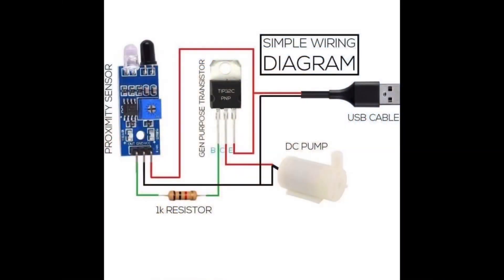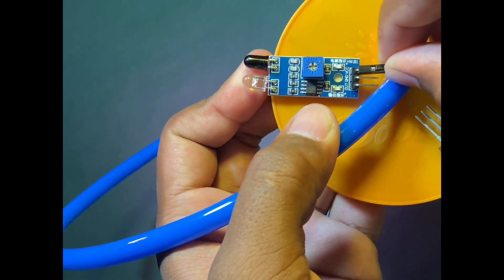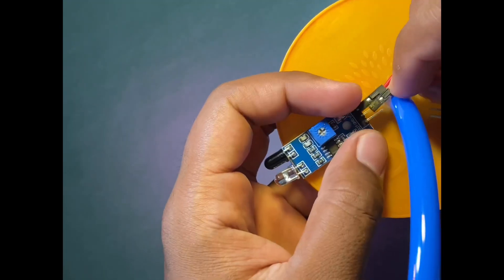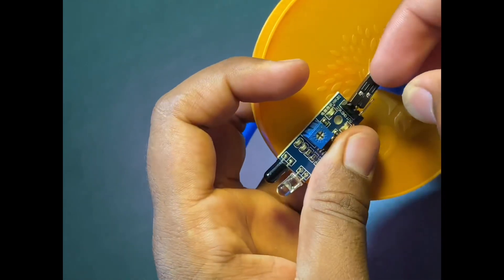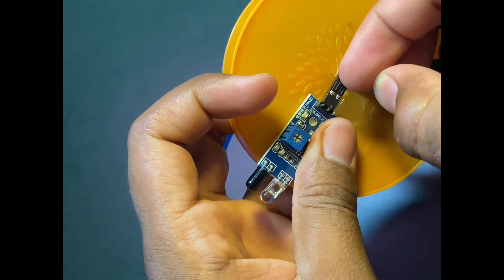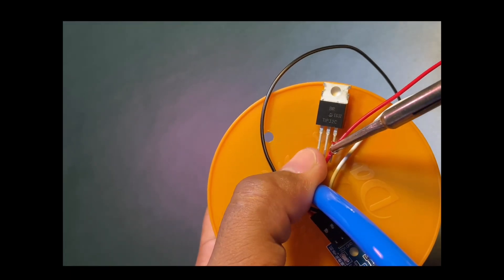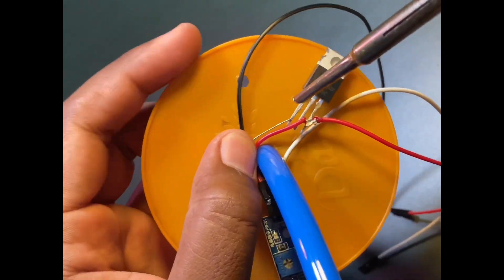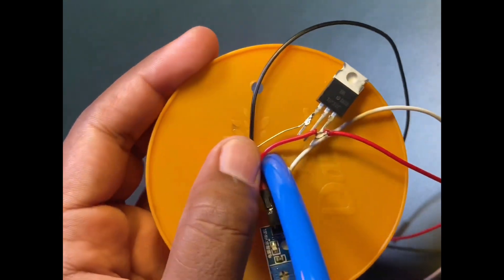Here is the simplified diagram for the wiring. The emitter of the transistor is connected to the VCC of the proximity sensor. Now connect the one kilo ohm resistor across the transistor base to the proximity sensor's out terminal.